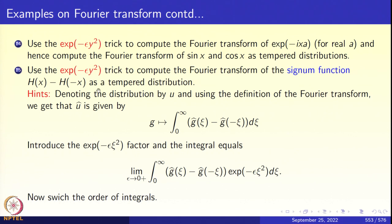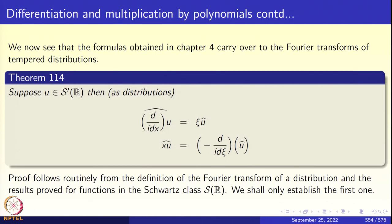In chapter 4, we saw that the Fourier transform exchanges differentiation and multiplication by the coordinate variable. In physicist's language, the momentum and position operators are dual with respect to the Fourier transform. The question is: does that formula carry over to tempered distributions? If I have a tempered distribution, I can differentiate it, so (1/i)(d/dx) can be applied. I can also multiply a tempered distribution by a polynomial — in particular by a coordinate variable.